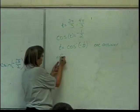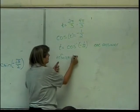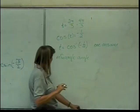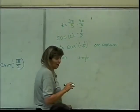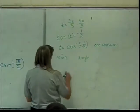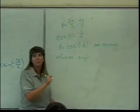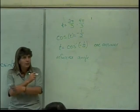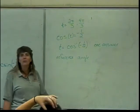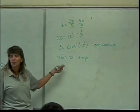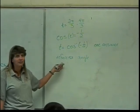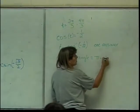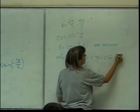So I get to now find the reference angle — the "refer-en-tangle." How do we find the reference angle in quadrant two? It's pi minus the angle. So in this case it's going to be pi minus this angle, which is cosine inverse of negative one-half.